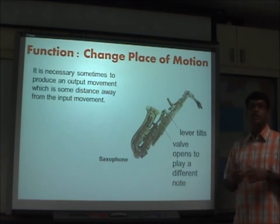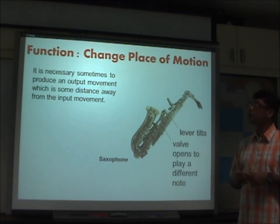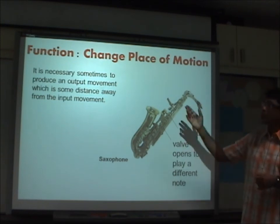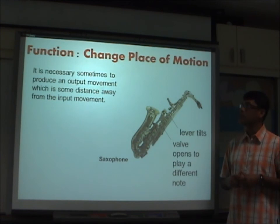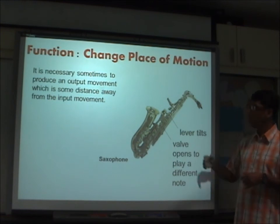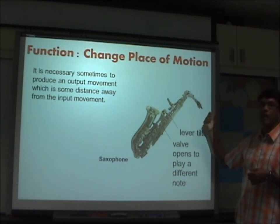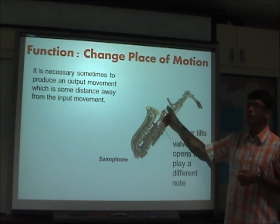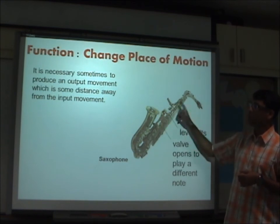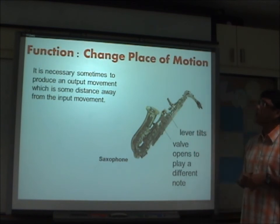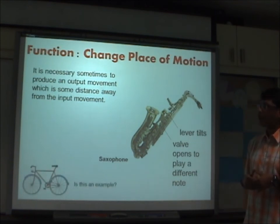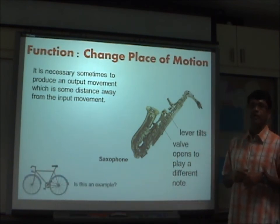Now let's look at the first function of a mechanism — change of place of motion. It is sometimes necessary to produce an output movement that is some distance away from the input. A very good example is a saxophone, where you blow air into the nozzle and use your fingers to activate the mechanisms, but the output is somewhere else from where you blow in. Can you also think of a bicycle as an example of a mechanism changing the place of motion?